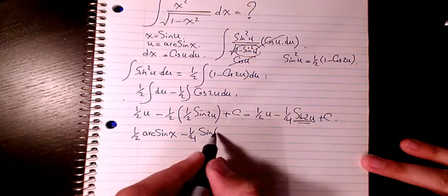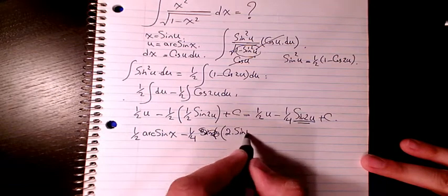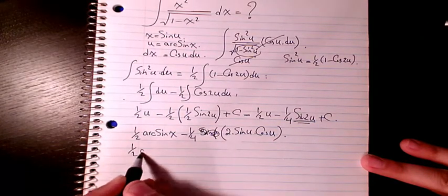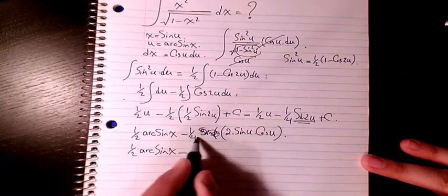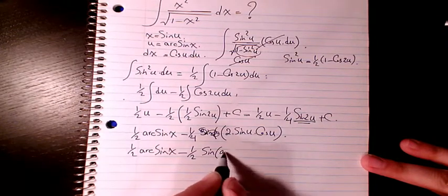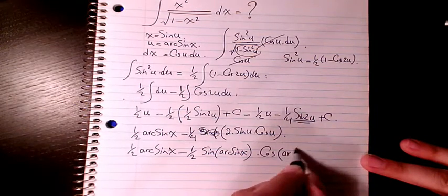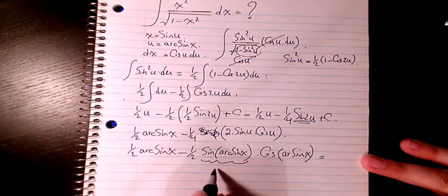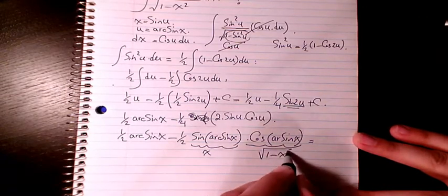I have sine 2u here, so I can write sine 2u as 2 times sine u times cosine u. So it's going to be 1 over 2 arc sine x minus 1 over 4, and dividing by 2 gives 1 over 2, times sine(arc sine x) times cosine(arc sine x). Now, sine of arc sine is just x, and cosine of arc sine is square root of 1 minus x squared.